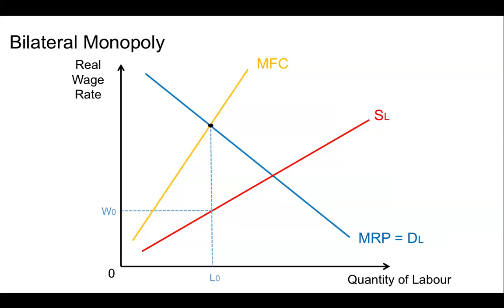But the fact that it's a bilateral monopoly means that we've got, on the one hand, the monopsonist — the monopoly buyer of all the labor — but we're now going to introduce a monopoly selling the labor. And to think about the monopoly selling the labor, we're going to say that there's a trade union which acts and represents all the workers as a single unit, which we therefore would say is a monopoly.